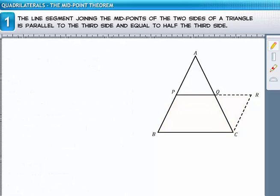Now, since opposite sides of a parallelogram are parallel, BC is parallel to PR, or in other words, BC is parallel to PQ.